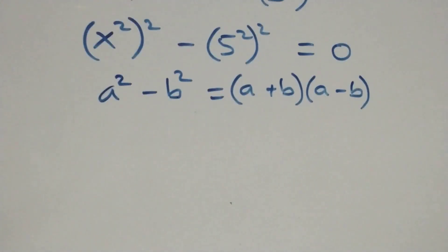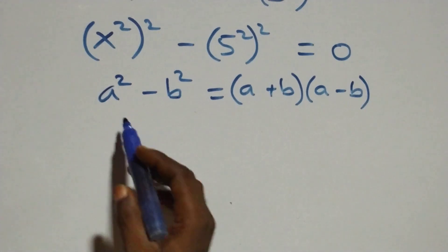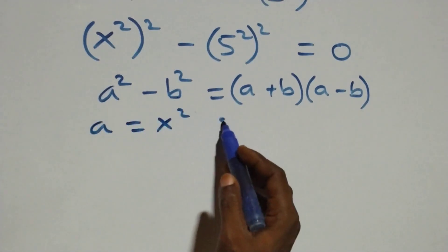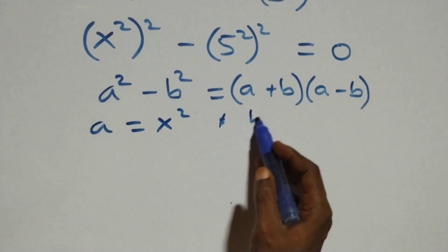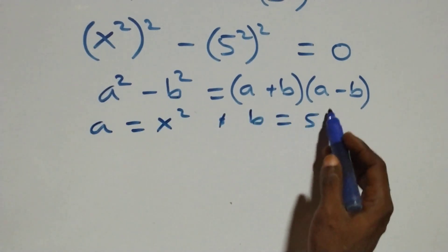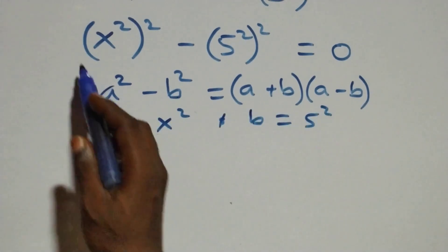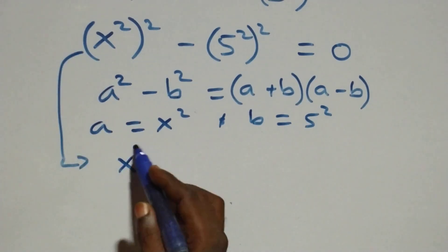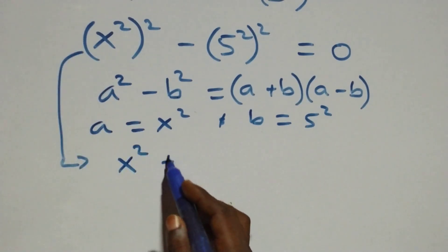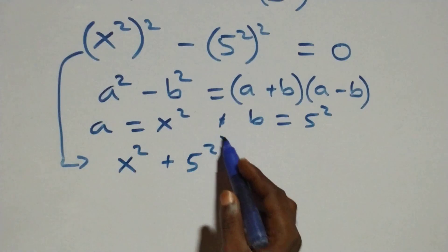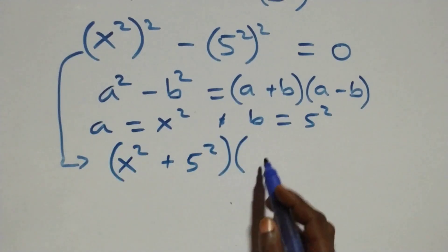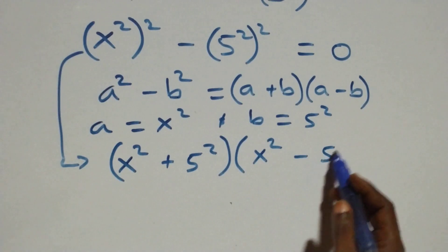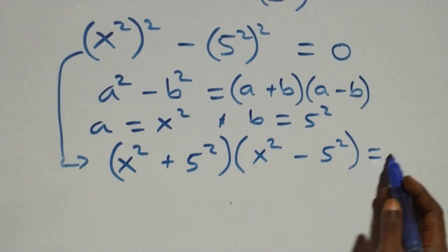Here a stands as x squared and b stands as 5 squared. Following this, it becomes (x squared + 5 squared) times (x squared - 5 squared) equals zero.